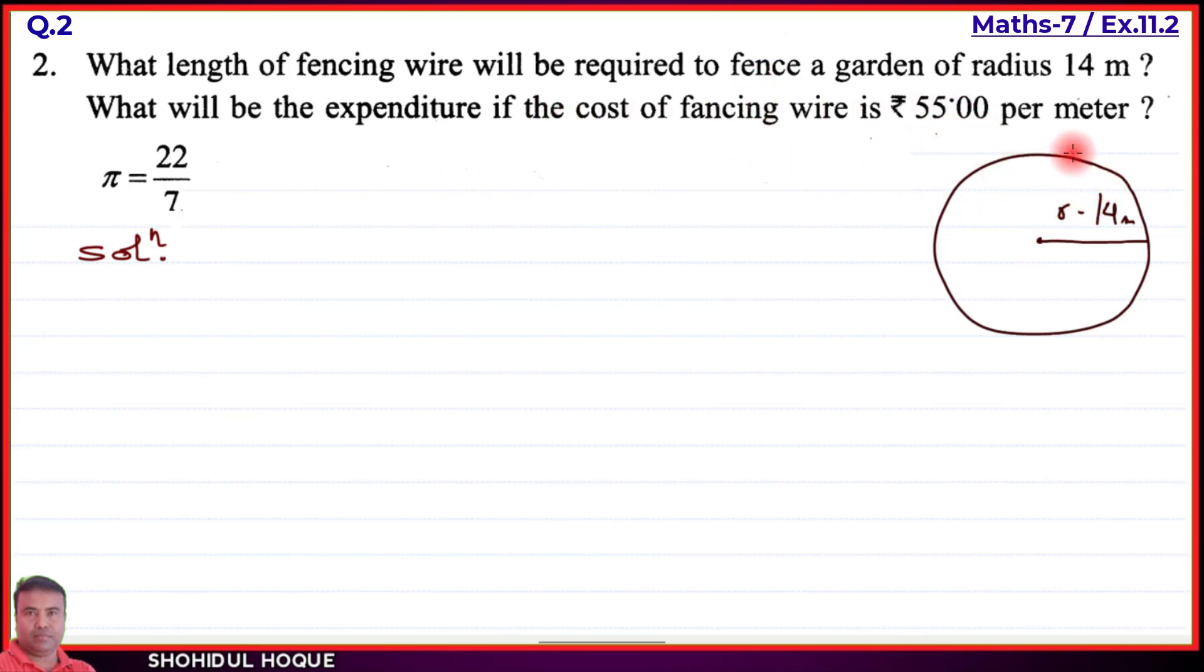Since one meter of wire costs 55 rupees, we need to find the total circumference first, then calculate the expenditure. First, let me write what is given: the radius is given as 14 meters.